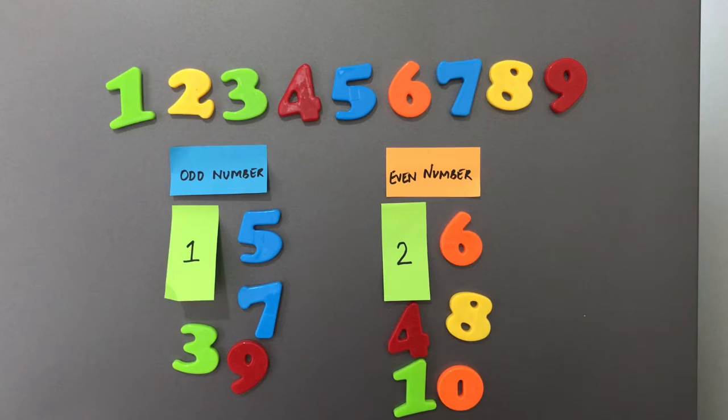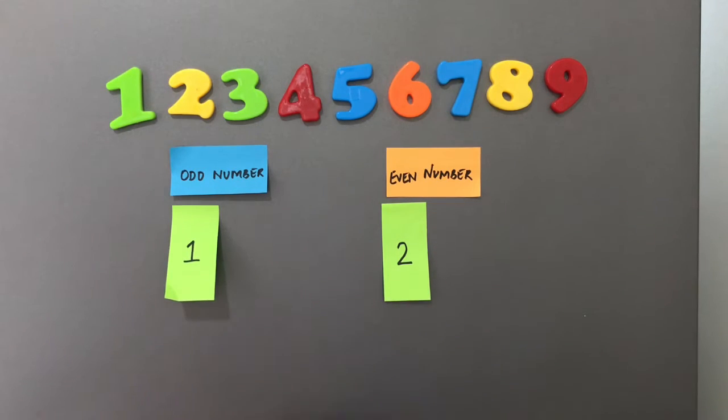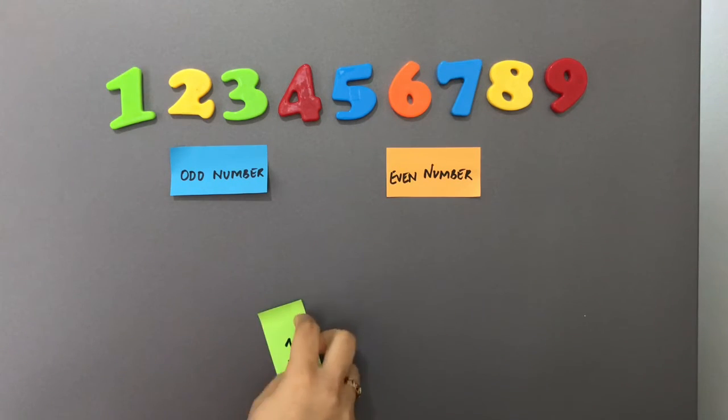And then you have number ten as even. Now what happens for numbers greater than ten? Ten is a problem. So in case of this there is a very simple solution. What I ask the child to do is simply look at the units place.